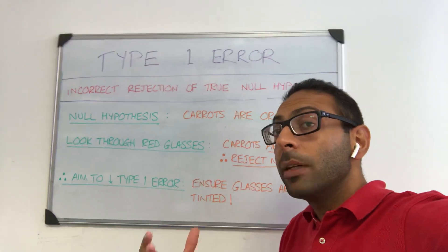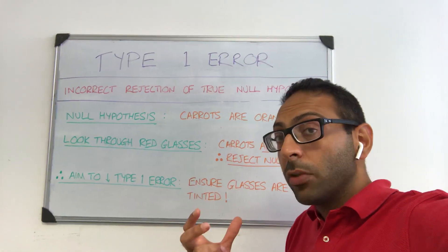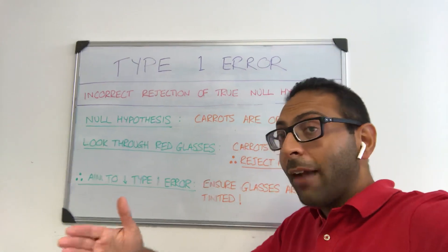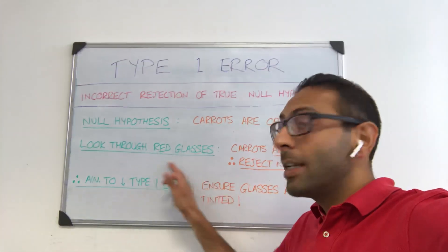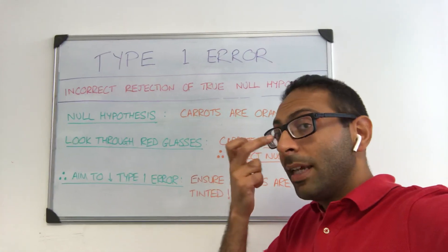Now say someone comes along and says I want to do an experiment to see if they actually are orange or not, and they look at a hundred different carrots, but they look at them through a red tinted set of glasses, so red tint in their lens.